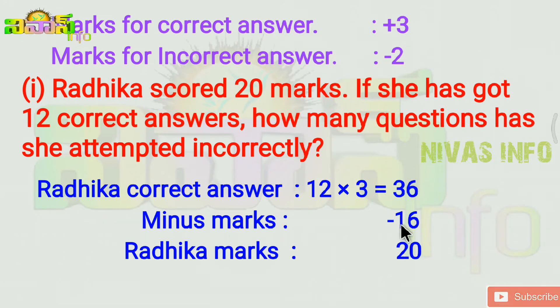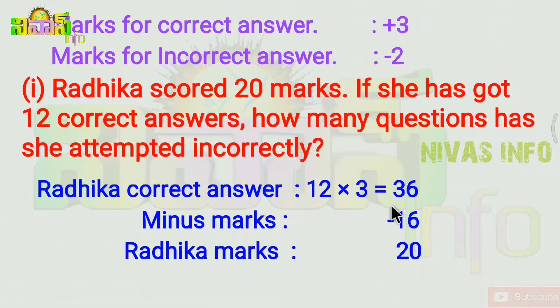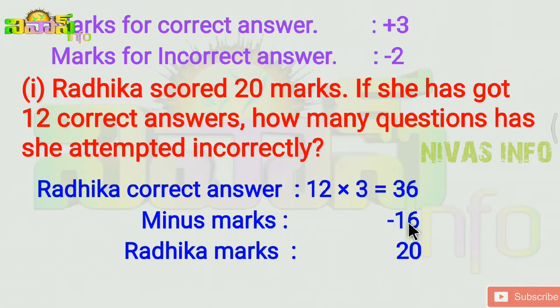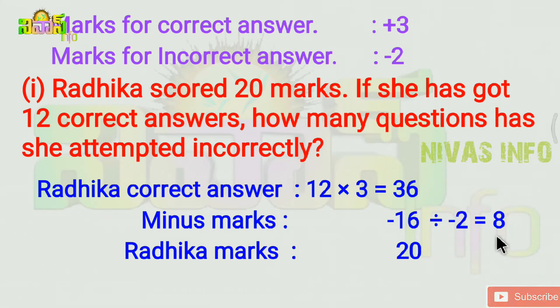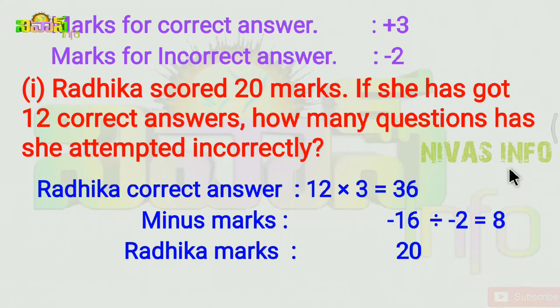The remaining marks difference is 16. So 16 divided by 2 gives 8 incorrect answers.